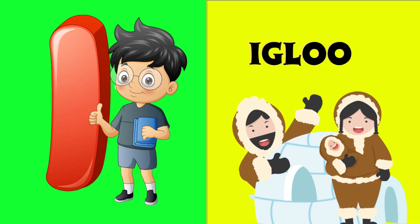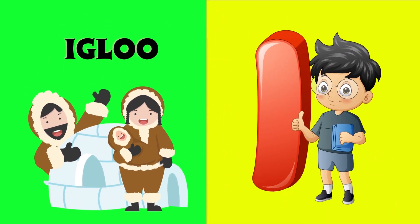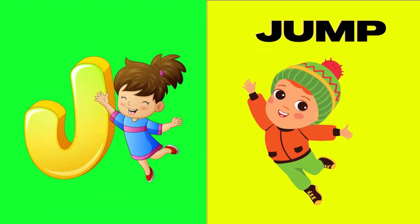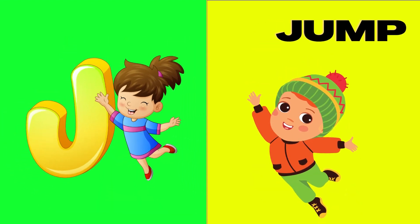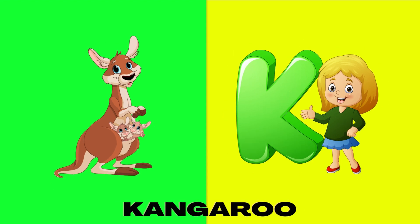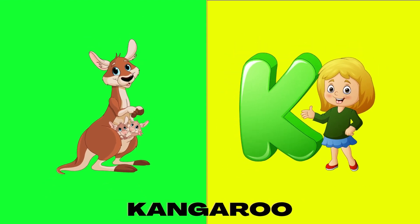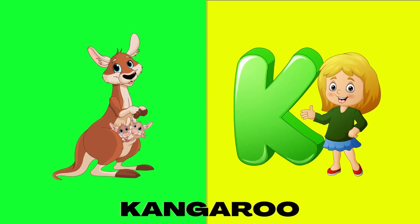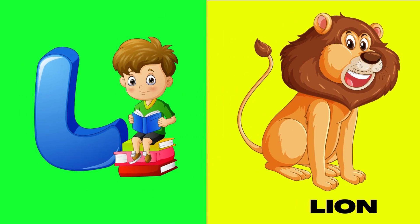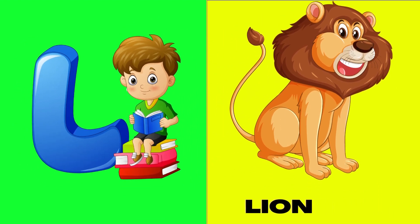I is for igloo, i-i-igloo. J is for jump, j-j-jump. K is for kangaroo, k-k-kangaroo. L is for lion, l-l-lion.